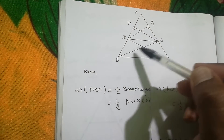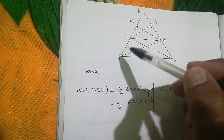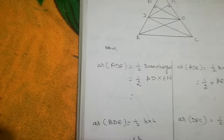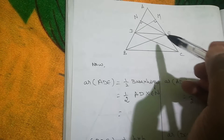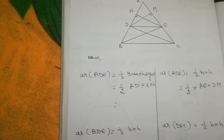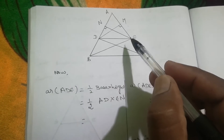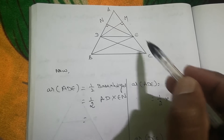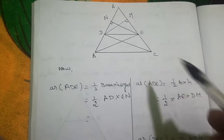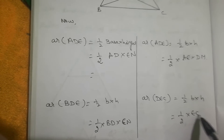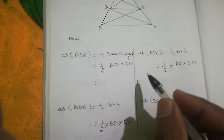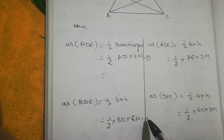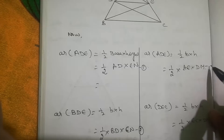For triangle BDE: base is DB and height is EN (since EN is perpendicular to AB), so area equals half into DB into EN. For triangle DEC: base is EC and height is DM (since DM is perpendicular to AC), so area equals half into EC into DM. These are our four area expressions.